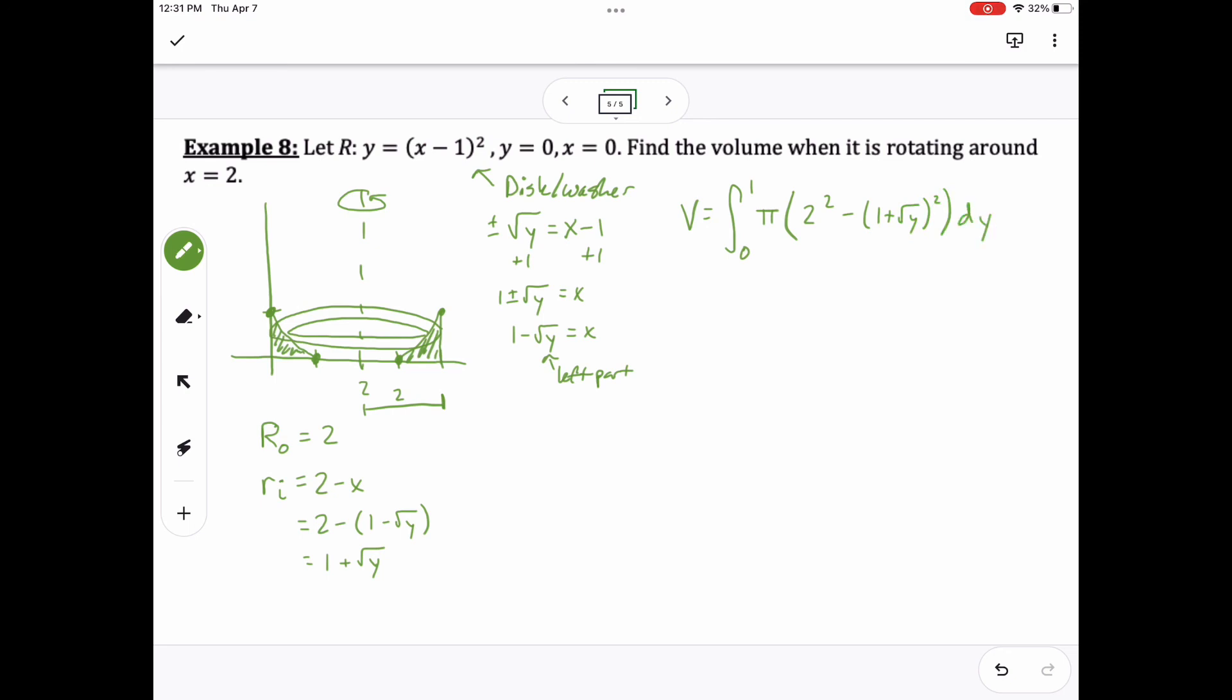I plug both of those in. Big radius squared minus little radius squared. So it's 4 minus 1 plus 2 square root of y plus y. I'm going to change the square root of y to y to the 1 half. I can move the pi out front just like always. Then I'll be able to take the antiderivative of that function. Notice that I get a fraction over a fraction for that middle term, so I'm going to flip it up, which makes it 4y to the 3 halves power divided by 3.